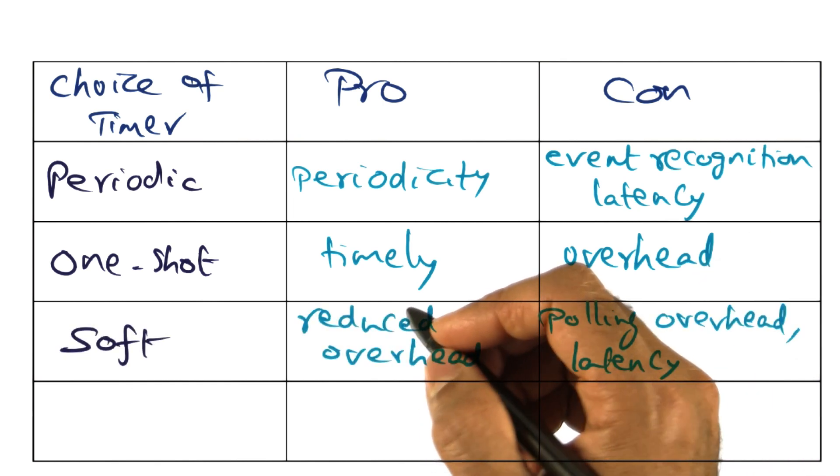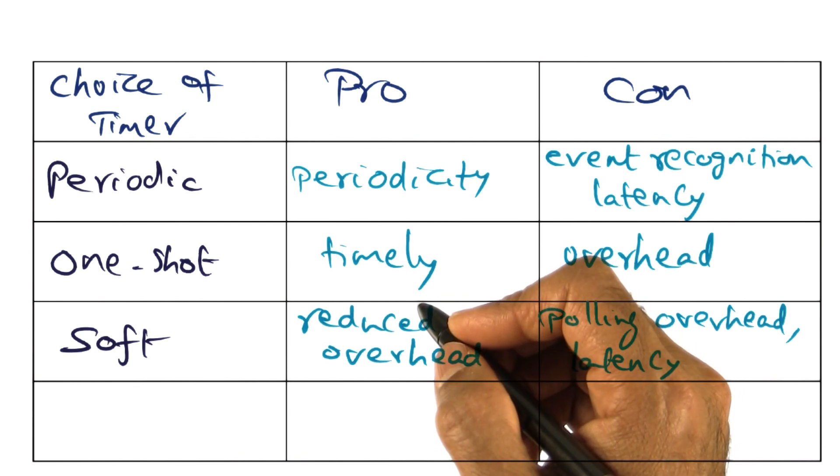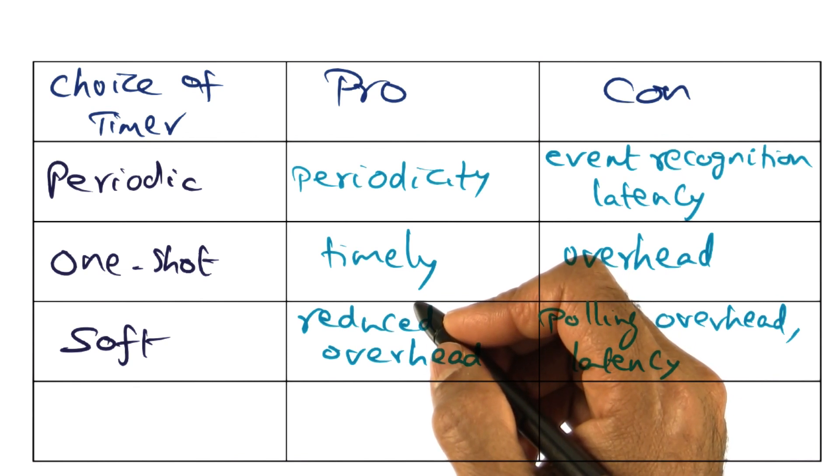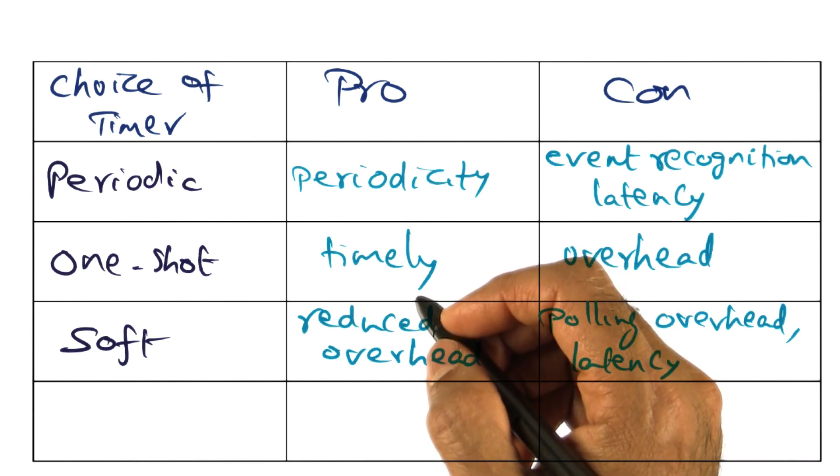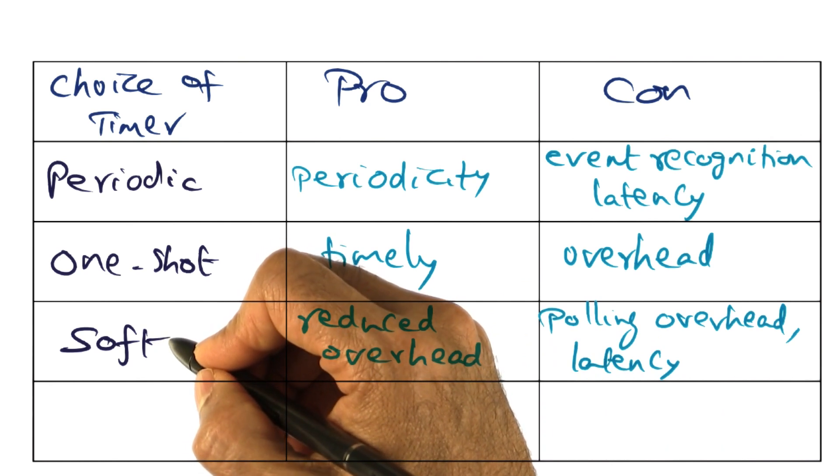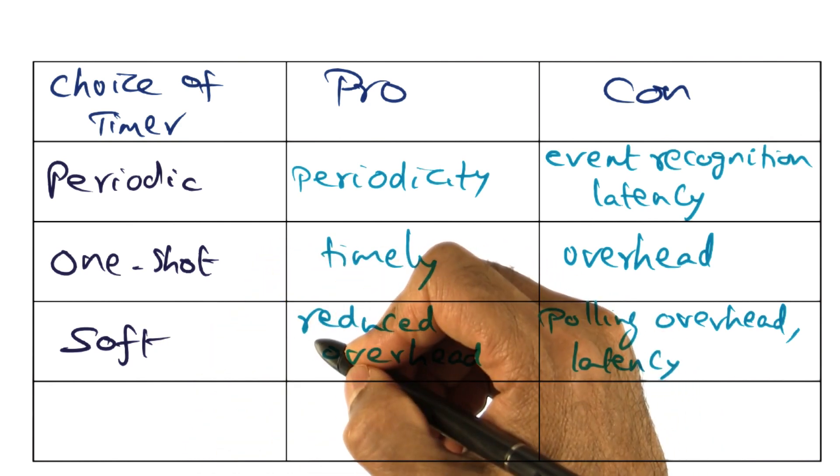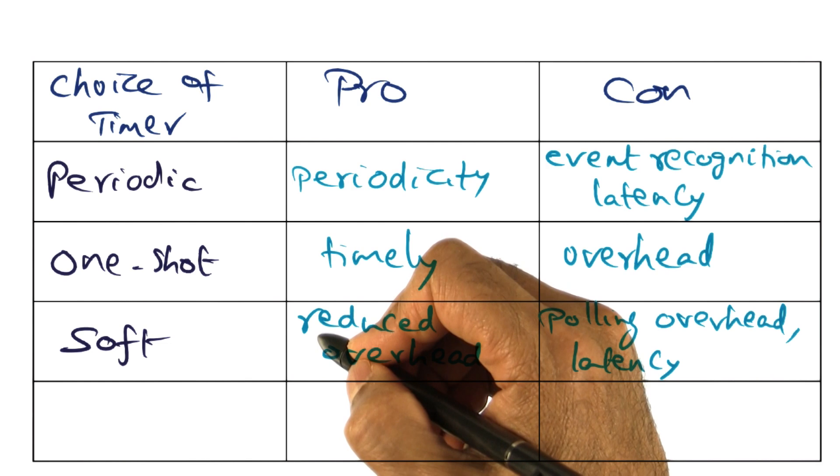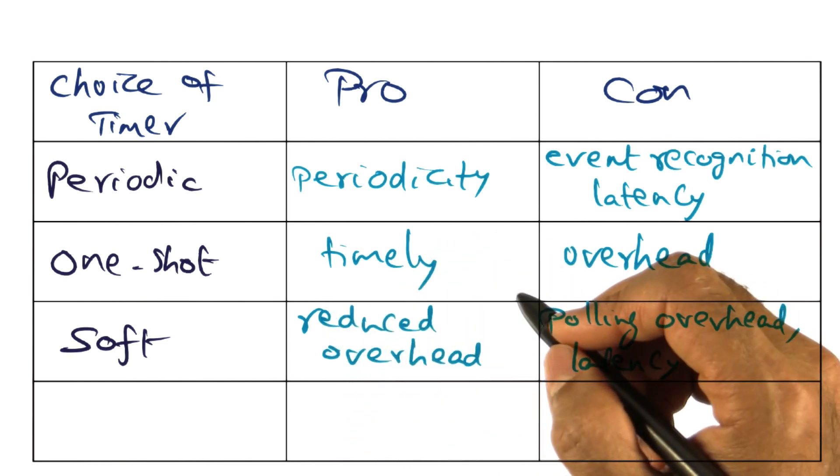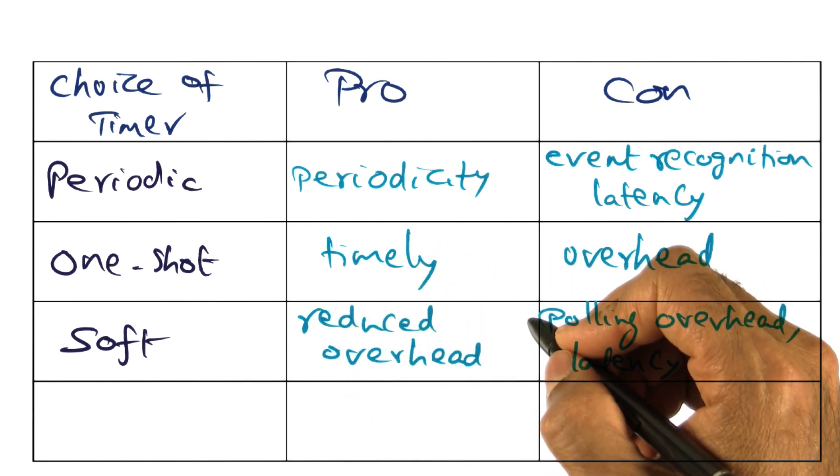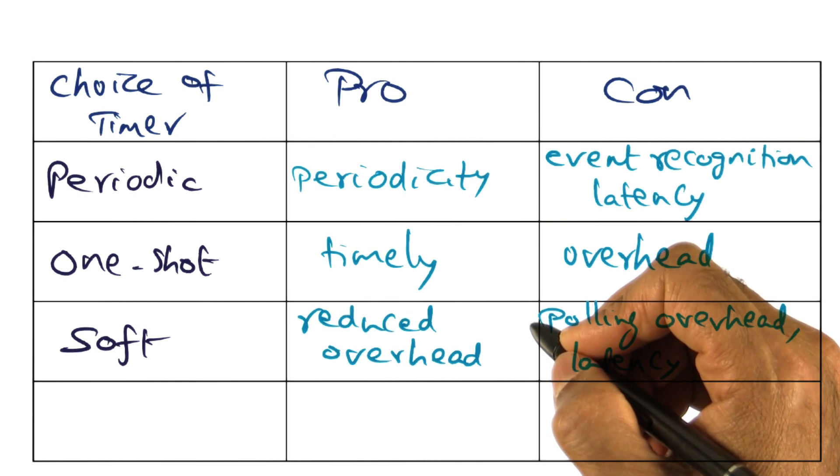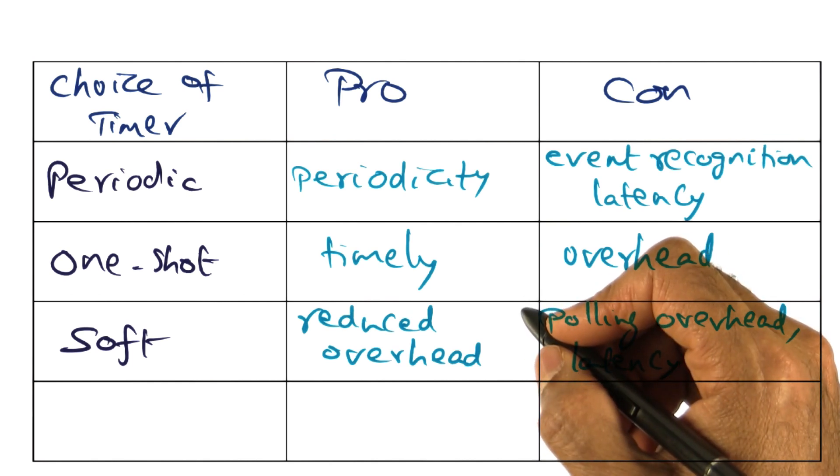If we are concerned with the interrupt overhead, one extreme position to take is to get rid of timer interrupts altogether and simply use soft timers. That is, there is no timer interrupt, but the operating system is going to poll at strategic times to see if there is an external event. What would be strategic times?